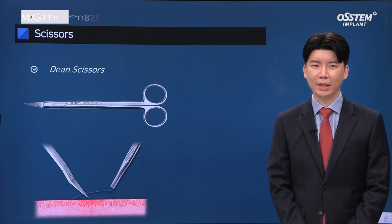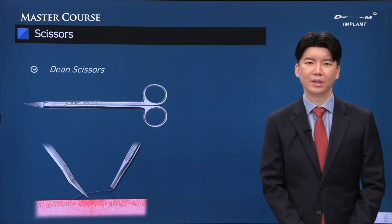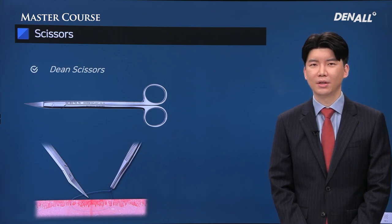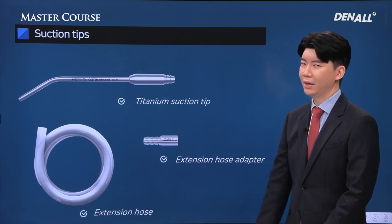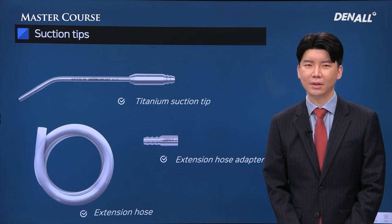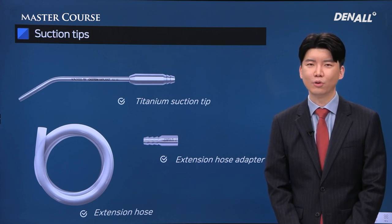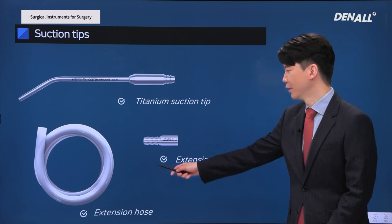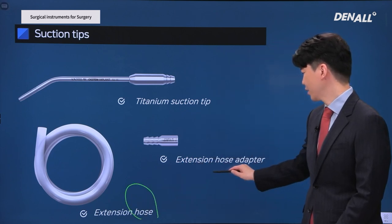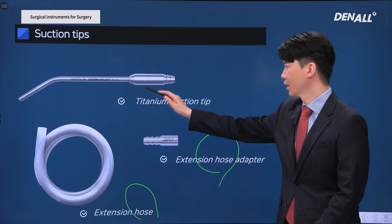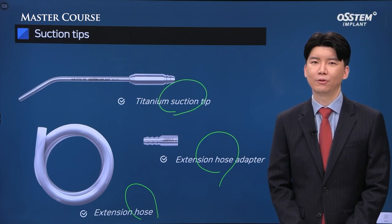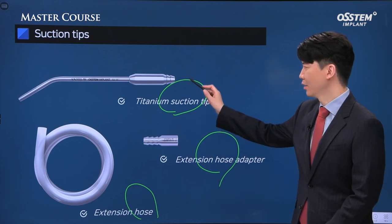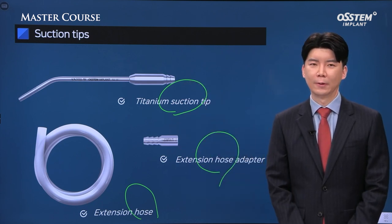There is also a need for a scissor to cut the suture — Dean's scissor is a very good option. As for suction, the suction attached to the chair is a little insufficient. You need to prepare an extension hose, an extension hose adapter, and a titanium suction tip with a thin edge before surgery. This allows you to perform suction in deep areas very well and helps gain visibility.